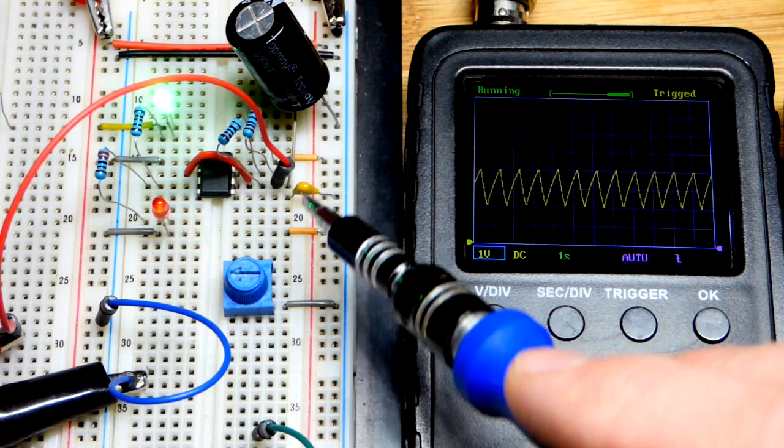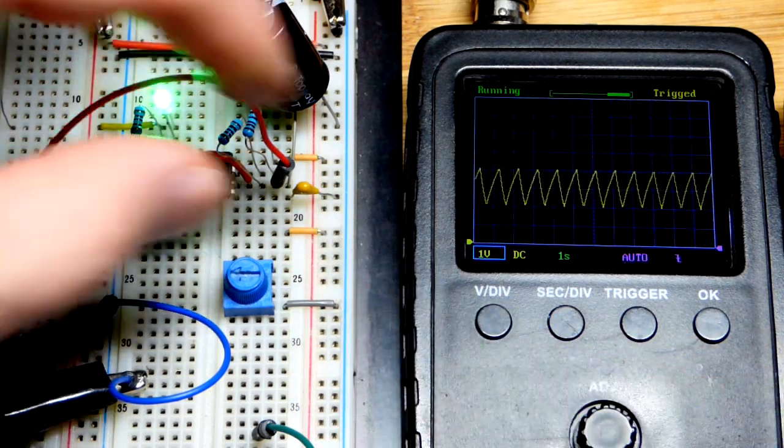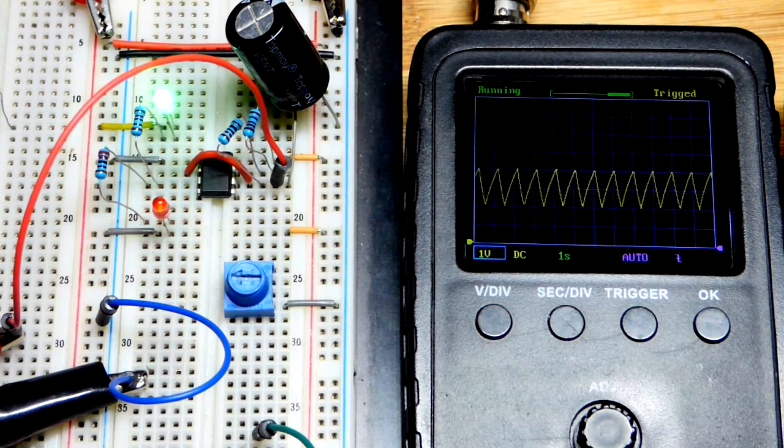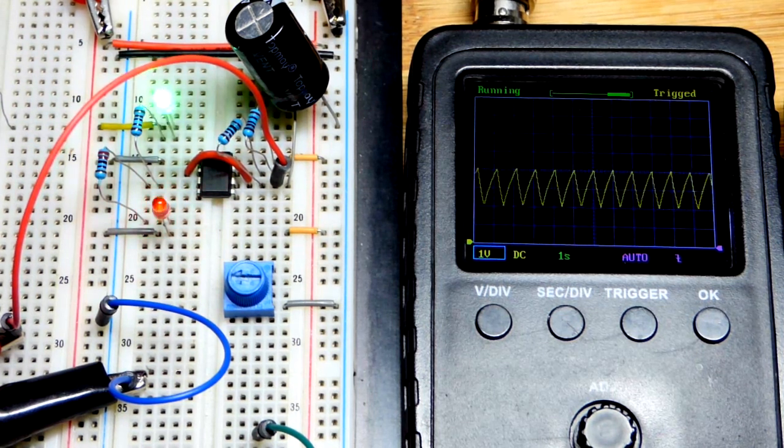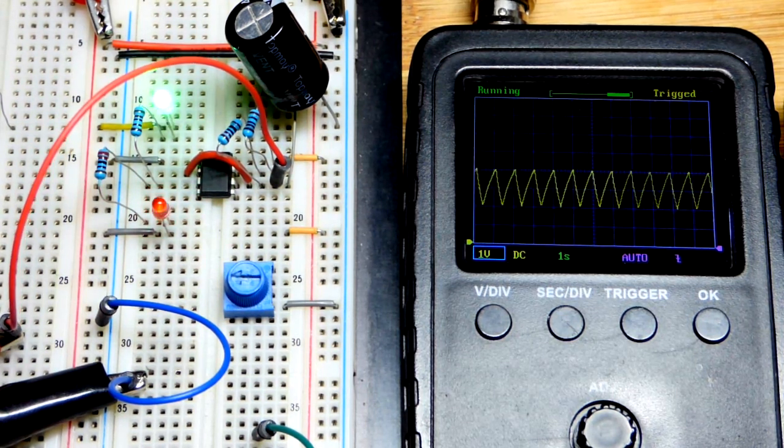So a lot of times you'll see a 10 nanofarad capacitor there. Sometimes you really need that for your circuit, most of the time I find you don't. If you remove it then you don't really see any difference.